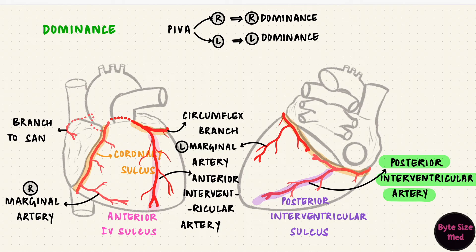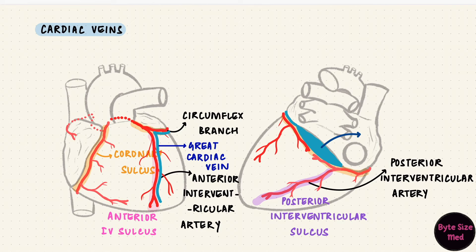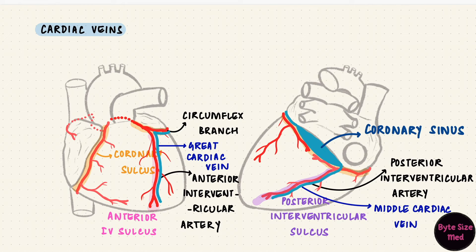After the arteries supply the heart, the veins carry the deoxygenated blood back to the right atrium. The important veins accompany the arteries in the sulci. The great cardiac vein accompanies the anterior interventricular artery in the anterior interventricular sulcus. As it turns onto the back of the heart it accompanies the left circumflex artery, then enlarges to form the coronary sinus, located on the posterior surface in the coronary sulcus between the left atrium and left ventricle. The middle cardiac vein accompanies the posterior interventricular artery in the posterior interventricular sulcus, draining into the coronary sinus. The small cardiac vein travels in the coronary sulcus alongside the right coronary artery, also reaching the coronary sinus.